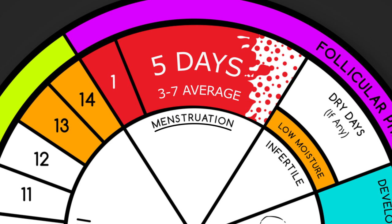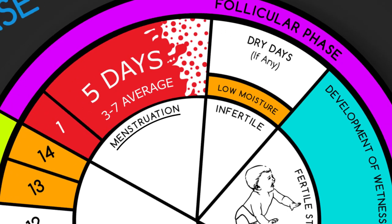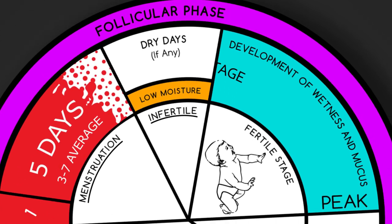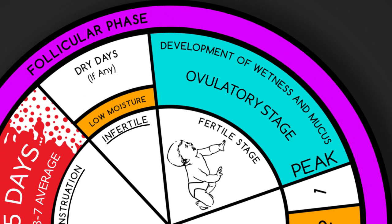At the end of the menses stage, the follicular phase is usually followed by several days during which the woman feels a sensation of dryness or dampness at the vulva. This is an infertile time, and this stage ends with the beginning of the ovulatory stage.